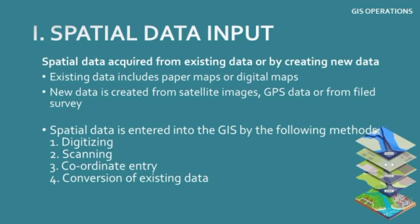The first GIS operation is spatial data input. Before starting anything, you need to input a map so that we can input parameters or attribute data into it. For example, if we want to produce data on pollution in India, the first step is the map of India with accurate coordinates — that is the spatial data — and you want to input that digitized map of India into the GIS software. It is usually acquired from existing data or by creating new data.